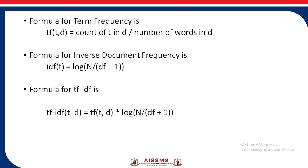The formula for term frequency is: count of the term in the document divided by the number of words in the document. The formula for inverse document frequency is: log(N / (document frequency + 1)). The formula for TF-IDF is: TF multiplied by IDF.